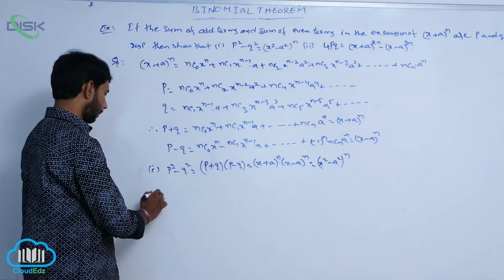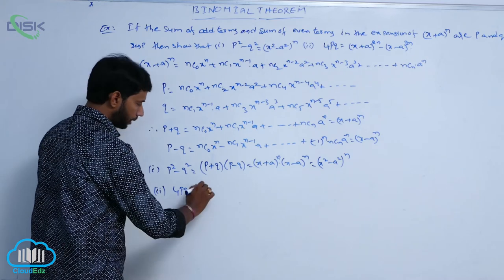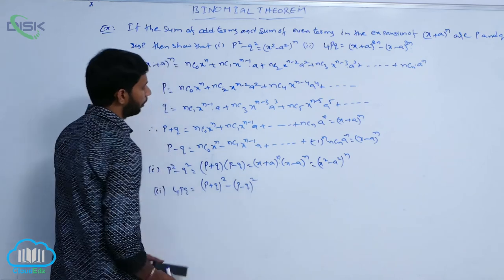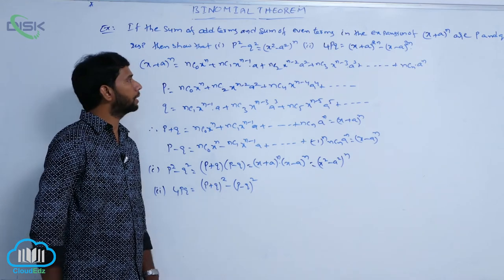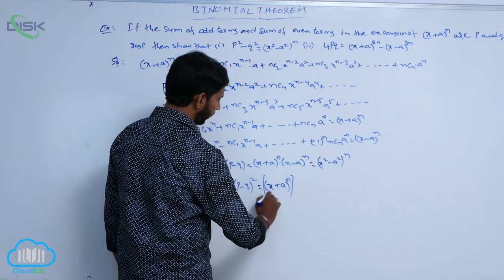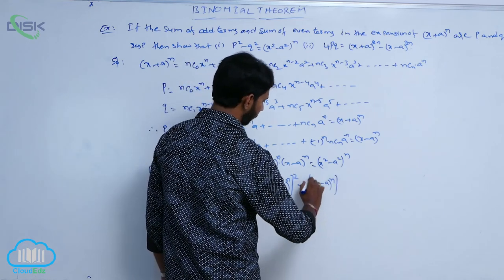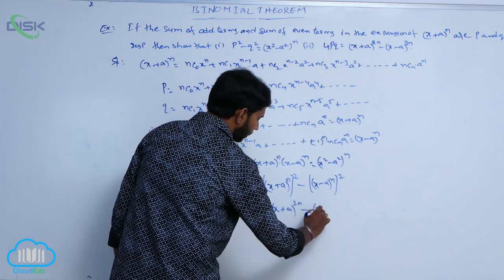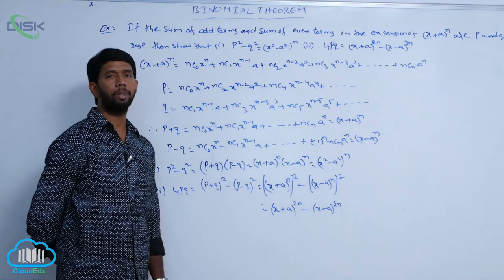For the second bit, 4pq can be written as (p + q)² minus (p - q)². Here p plus q equals (x + a) whole power n and p minus q equals (x minus a) whole power n. Therefore 4pq equals (x + a) whole power 2n minus (x minus a) whole power 2n.